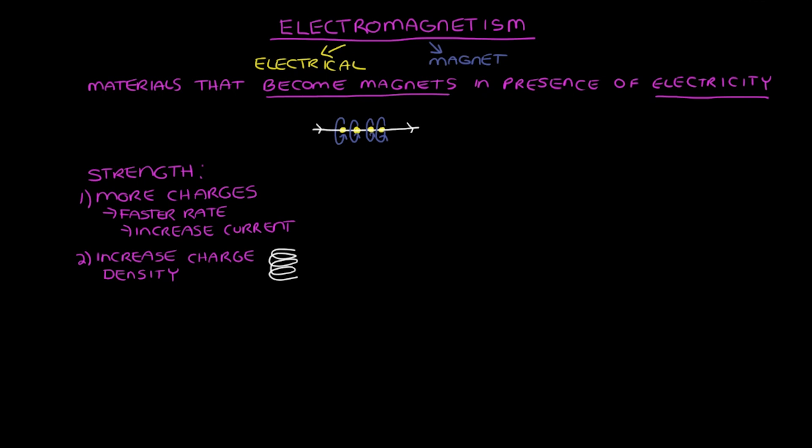The other thing we can control with electromagnets is the direction of the magnetic field, and we can do this by changing the direction of the electricity. So if we go back to this wire example from earlier and change the direction of the electricity running through that wire, well, the magnetic fields will also change direction.